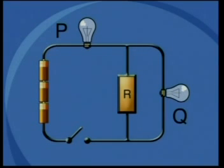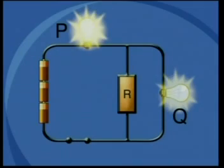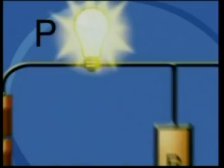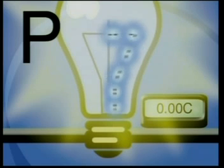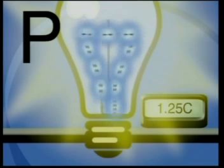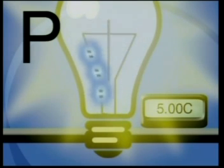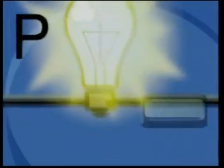When the switch is open, no charge is able to flow through the conductor. But when the switch is closed, the cell pushes the charge around the circuit. This happens because there is a continuous path of metal wire for the electric current to pass through. The flowing electrical charge carries energy to all the working parts of the circuit.